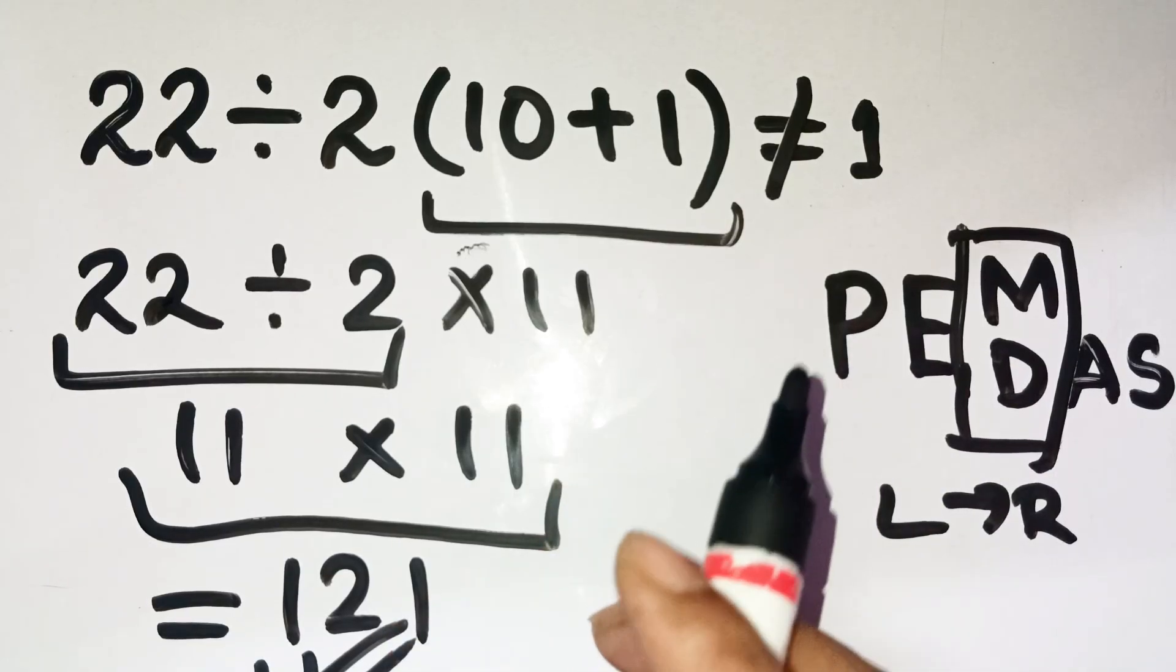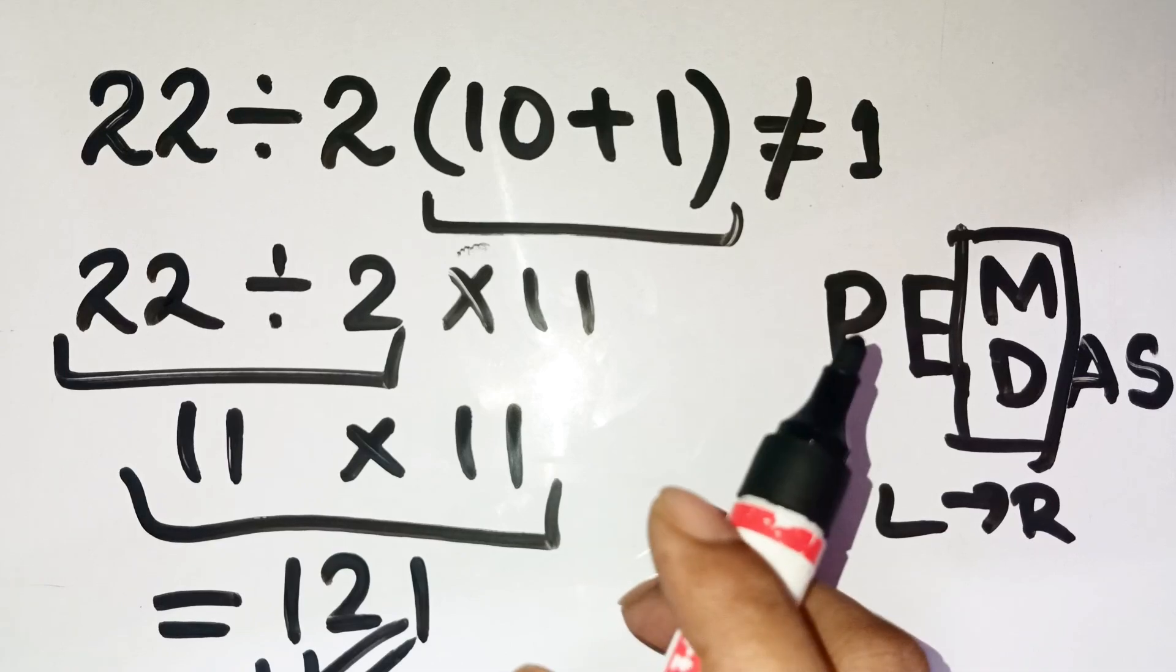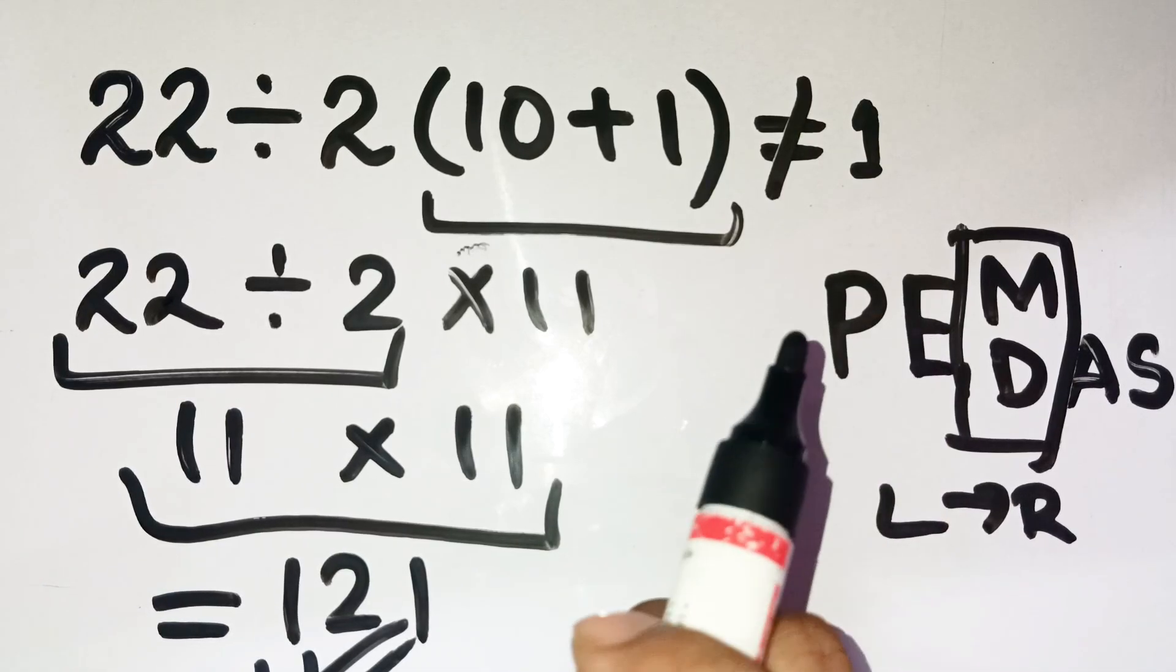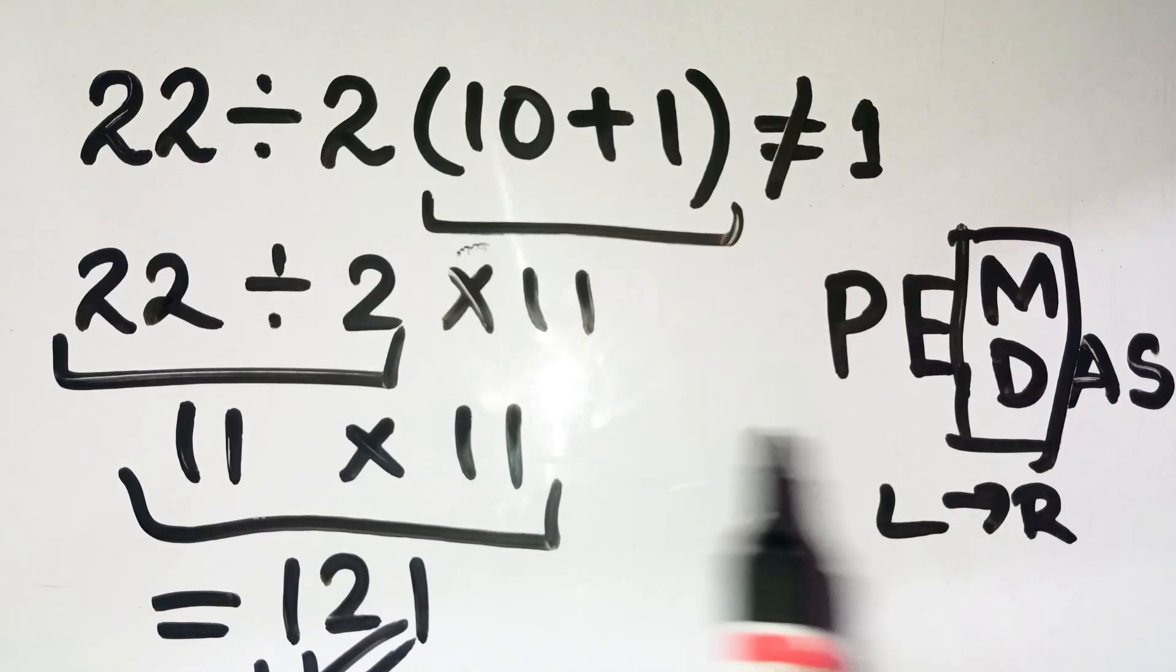So, next time you see a sneaky expression like this, remember, move step by step. Don't bundle terms that aren't grouped with parentheses, and always check the left to right rule.